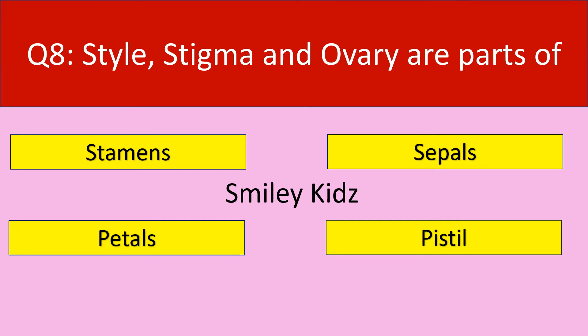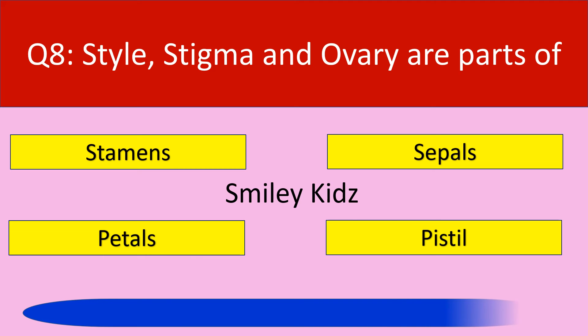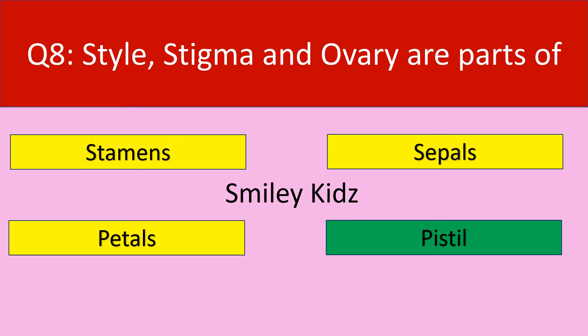Question number 8. Style, stigma and ovary are parts of — stamens, sepals, petals, or pistil. Your time starts now. The correct answer is pistil. Style, stigma and ovary are parts of pistil.